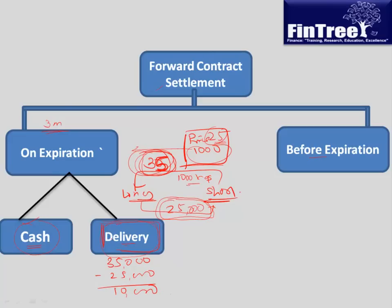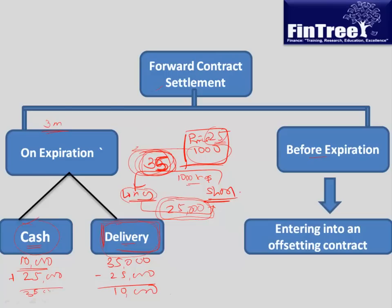Alternatively, long can say to short: why don't you simply pay me Rs.10,000? If short gives long Rs.10,000 and long still needs potatoes, they can use their own Rs.25,000 plus the Rs.10,000 to buy in the market at Rs.35,000; otherwise they simply keep the Rs.10,000. This is cash settlement versus delivery.